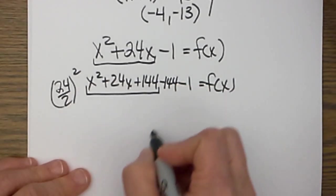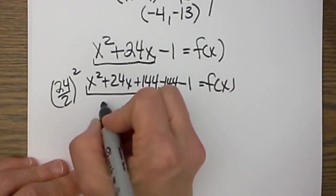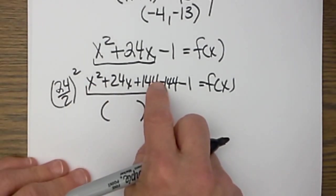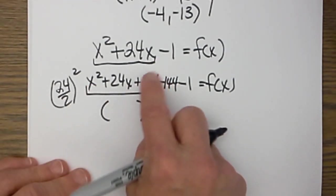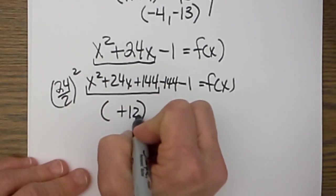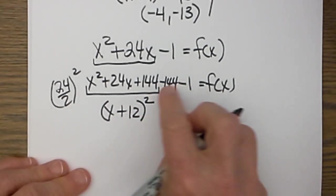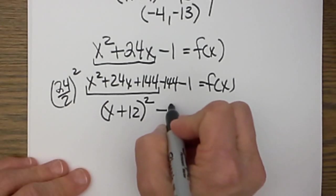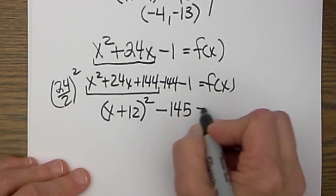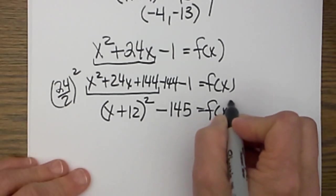Now let's group the first two together to make our perfect square. The perfect square that this factors to is always the square root of what we just found—the 144 what we added is the square root of that value. And in the back we are going to get negative 145. Negative 144 minus 1 is negative 145. So there is our function.